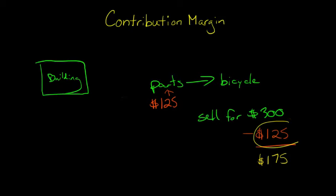So basically, this is what it cost you to make the bike, and then this is what you got for the bike, and then this is what's left over. So $175 is not, although it might seem like it's your profit, it's really not, because, remember, you had to rent a building here. So you've got this, and this is a fixed cost.